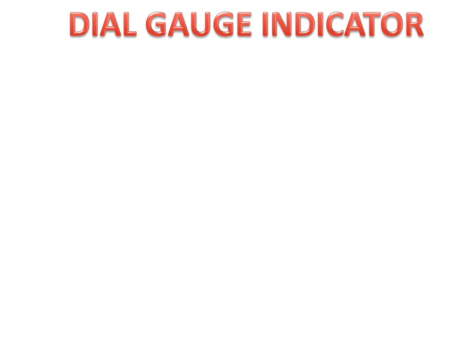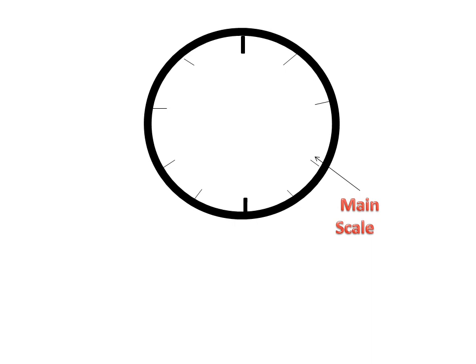Firstly we will discuss the parts of the dial gauge indicator. We have a circular disk type scale. This is the main scale with readings 0, 10, 20, 30 to 90. And in between these we have a pointer. This is a pointer which will give us reading.